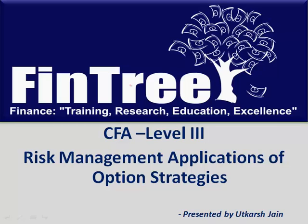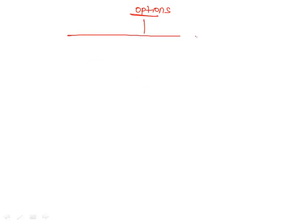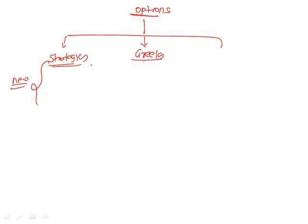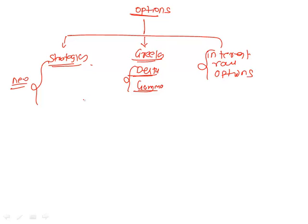Risk management application of option strategies is roughly divided into three parts. The first part revolves around different options strategies, which is relatively newer and not covered much at CFA Level 1 or Level 2. The second part revolves around the option Greeks with a heavy focus on delta and gamma, studied at CFA Level 2. The third part covers interest rate options, which is fairly intuitive.